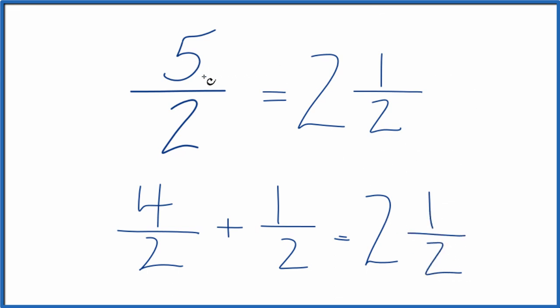Either way, when you convert the improper fraction 5 over 2 to a mixed fraction, you get 2 and 1 half.